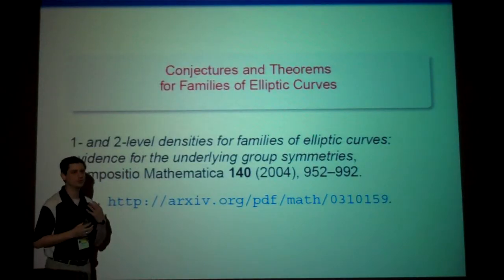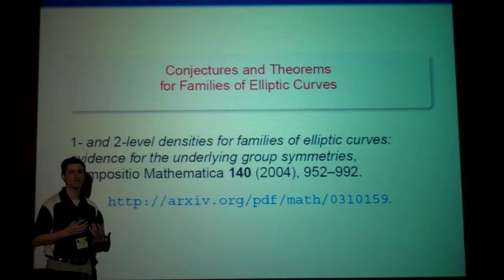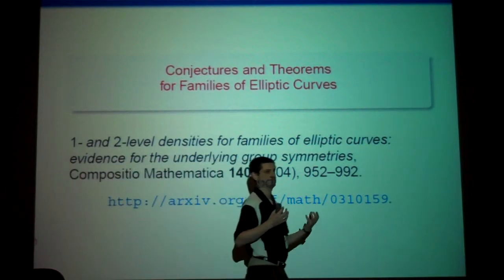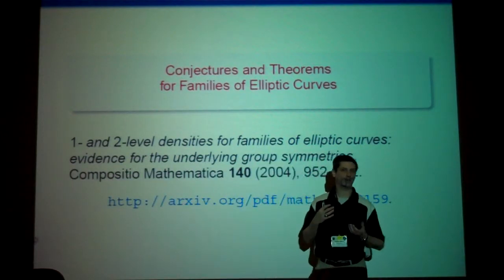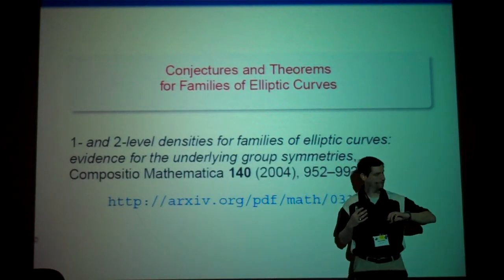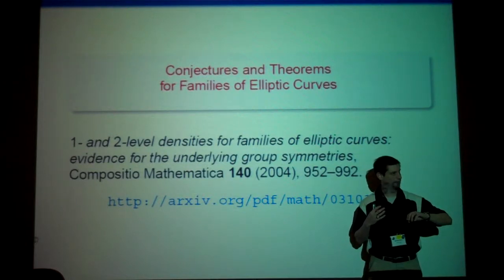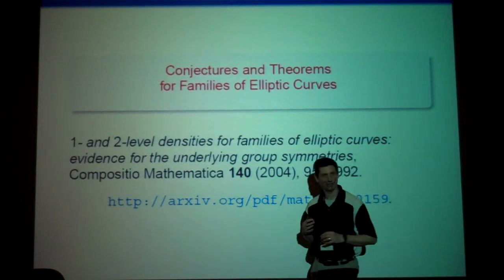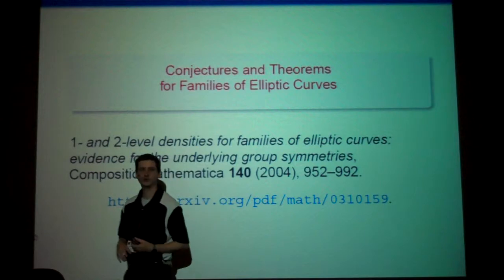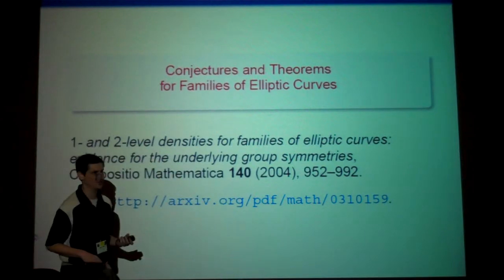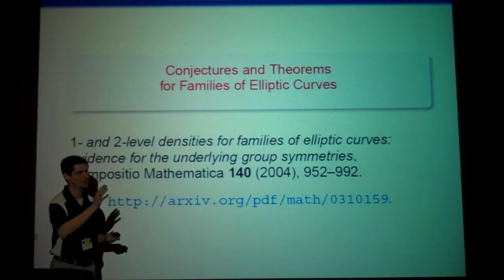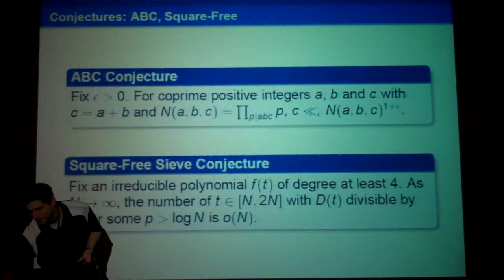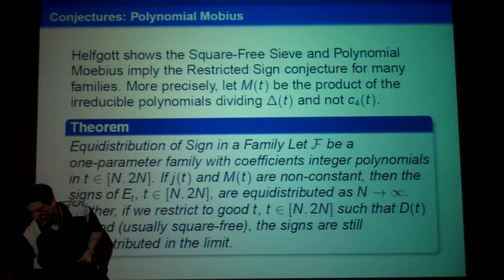I want to shift gears and talk about results for elliptic curves. I asked how long I have and was told until 10:30 — that is not enough time to go through all the different conjectures, so I'm going to skip them. The conjectures are there on the slides. Assume standard conjectures about elliptic curves in what follows; in some cases, these are now theorems.